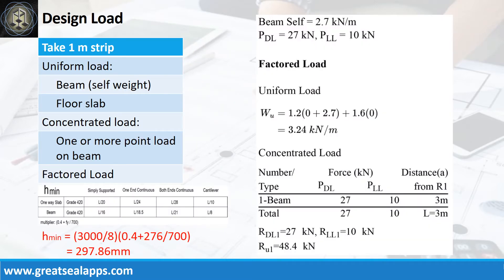The beam carries a concentrated dead load of 27 kN and concentrated live load of 10 kN at edge of beam, for a factored concentrated load of 48.4 kN. The beam self-weight is 2.7 kN per meter, for a factored uniform load of 3.24 kN per meter.